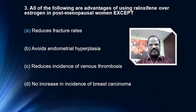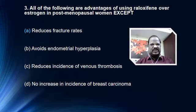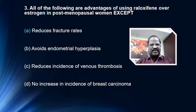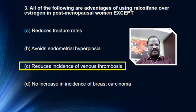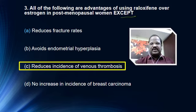One more question based on SERM: all of the following are advantages of using raloxifene over estrogen in post-menopausal women except. Options are: reduces fracture rate, avoids endometrial hyperplasia, reduces incidence of venous thrombosis, and no increase in incidence of breast cancer. The right answer is option C — reduces incidence of venous thrombosis.